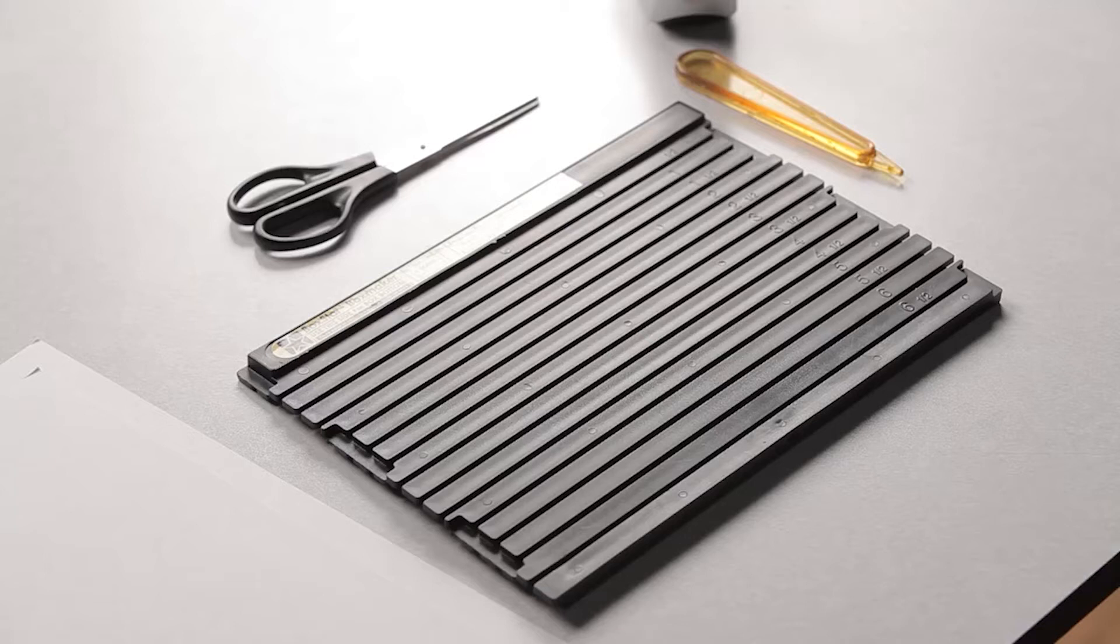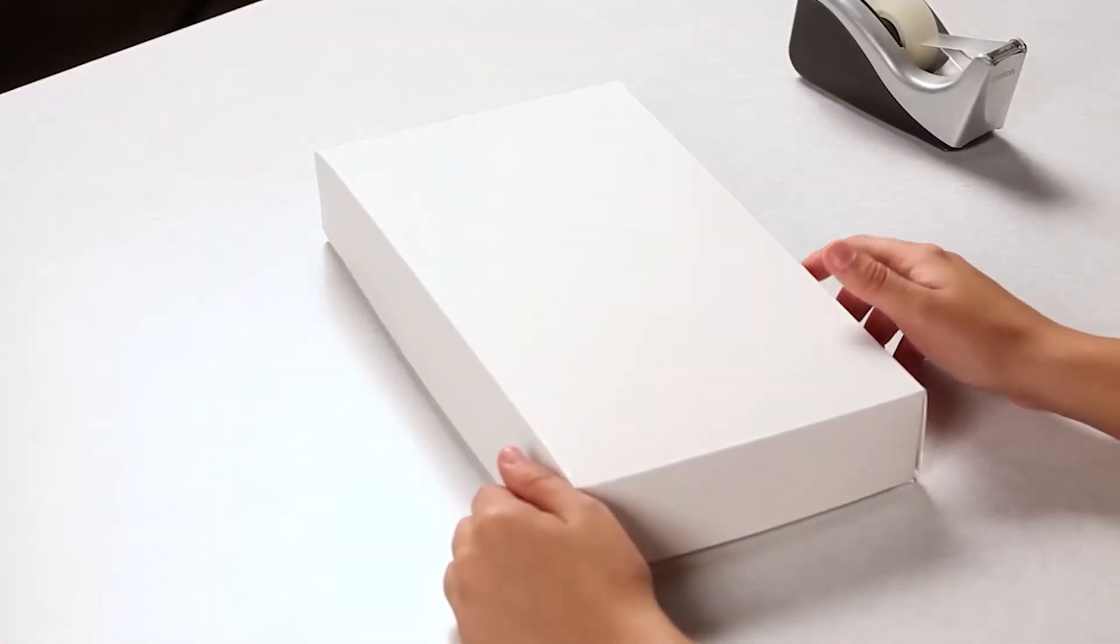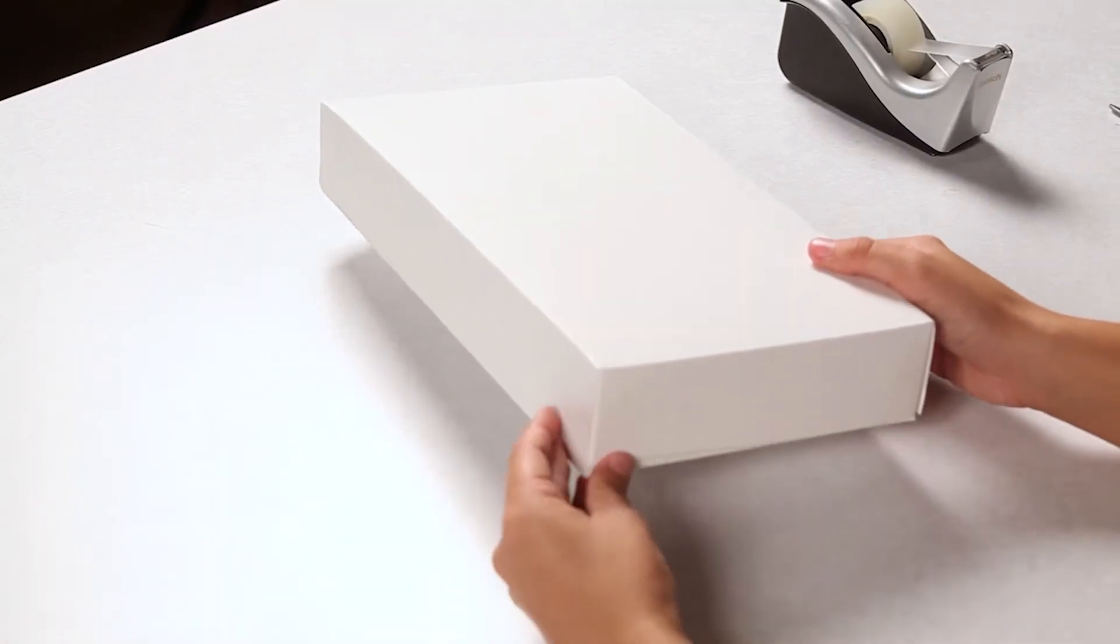For this demonstration, we'll use the box maker and scoring tool to create a simple telescoping type box. Many clothing boxes and gift boxes are telescoping type boxes.